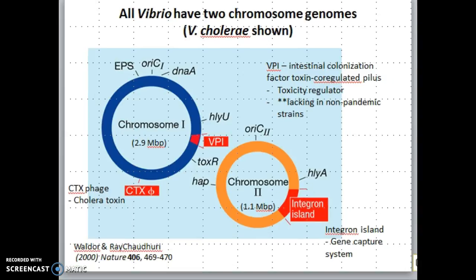Another interesting feature of the genus Vibrio is that unlike most prokaryotic cells, they all have two chromosomes. Shown here is a map of the two chromosomes found in Vibrio cholerae — chromosome 1 and chromosome 2. There are some genetic features annotated on these chromosomes, for example OREC, which marks where replication of each chromosome begins. Notably, these chromosomes are two different sizes: chromosome 1 is 2.9 megabase pairs and chromosome 2 is 1.1 megabase pairs.